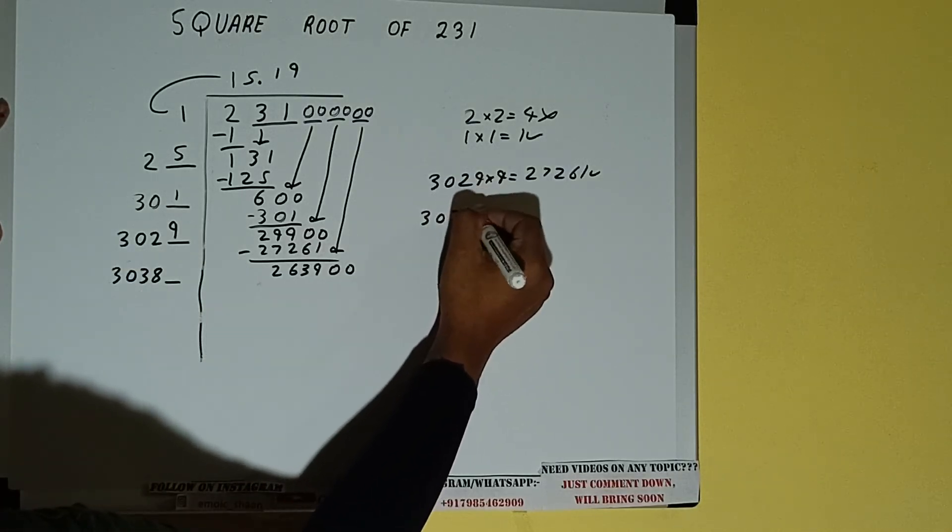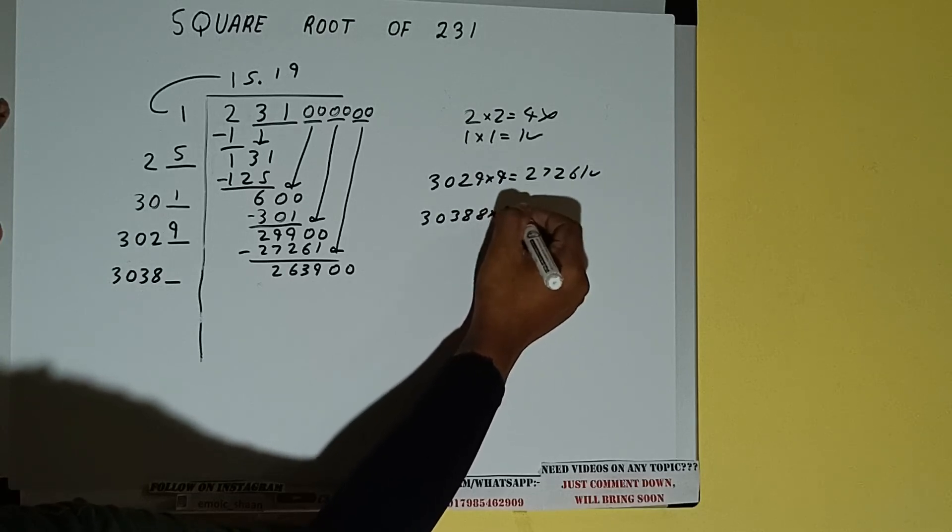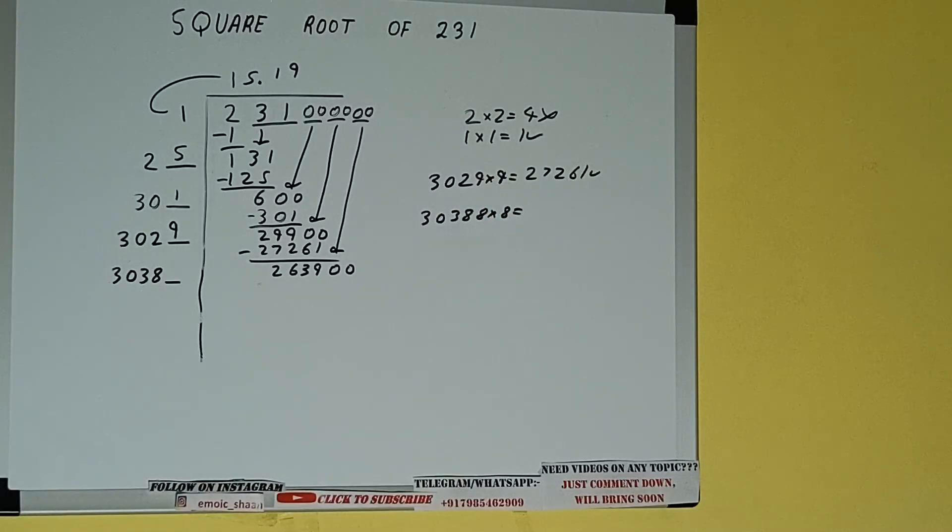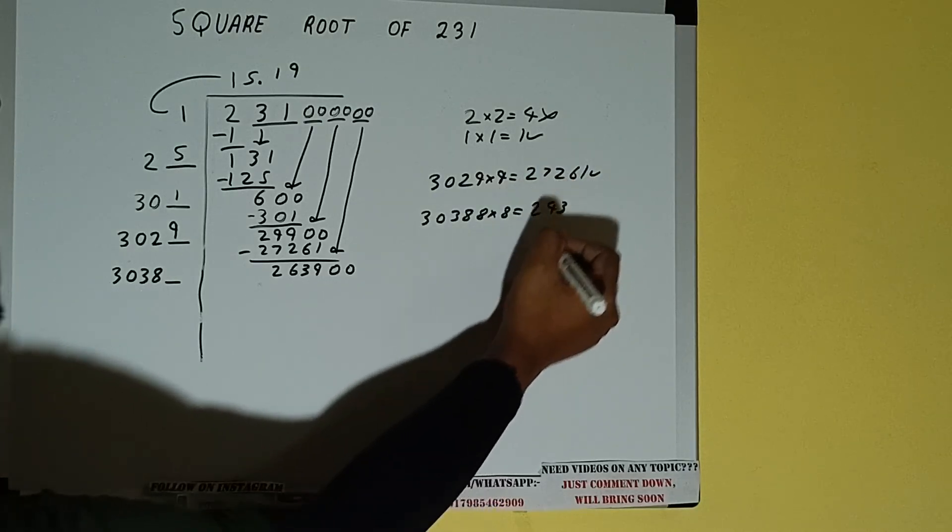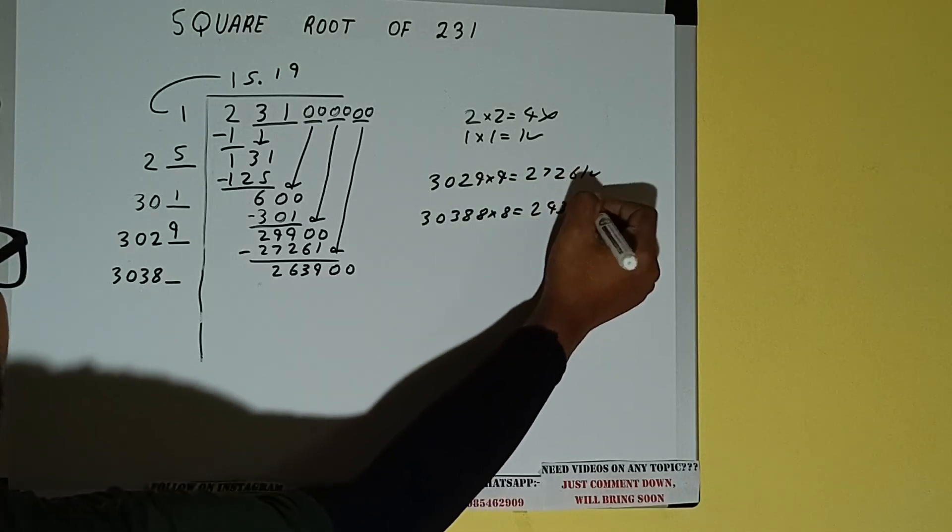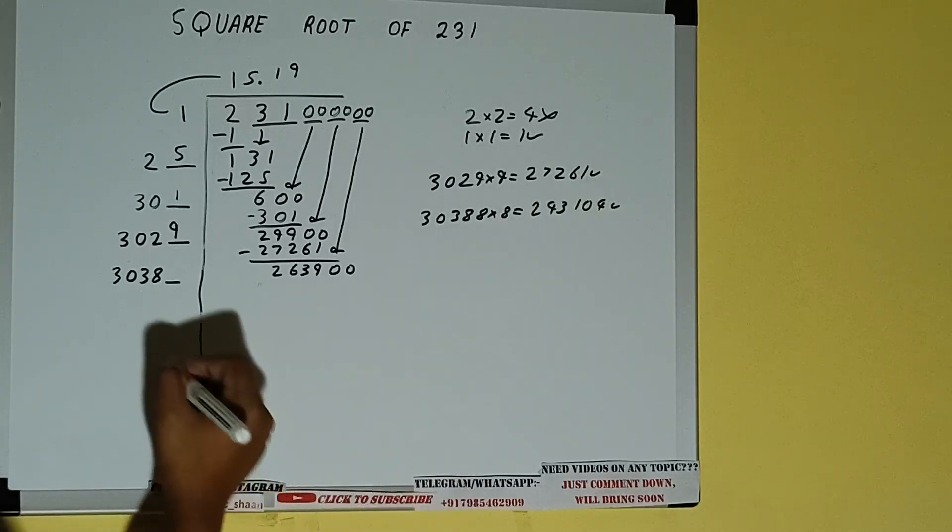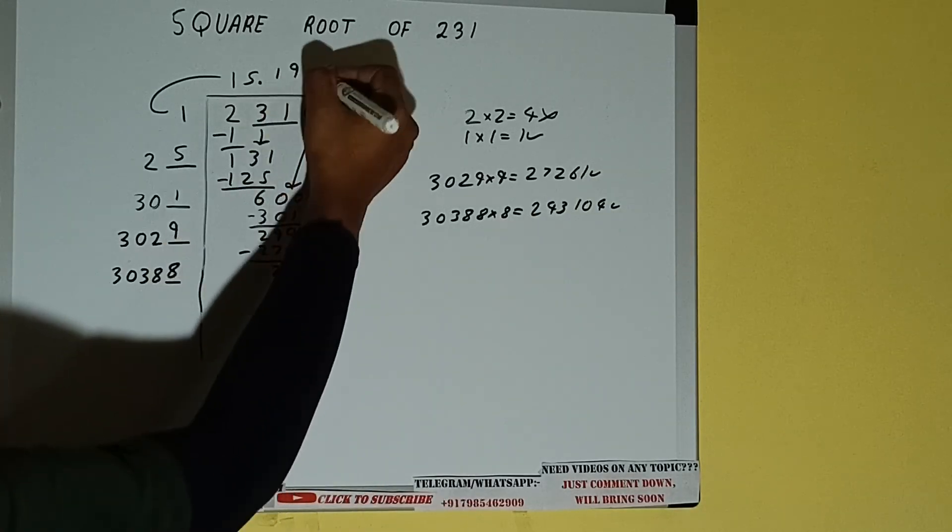30388 into 8 we can try, and we'll be having 243,104, which is good to take. So 8 here and 8 here.